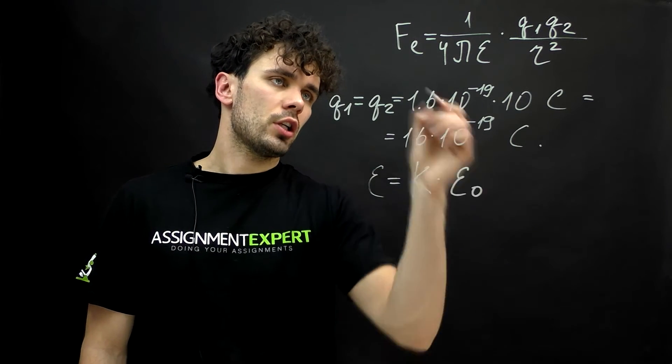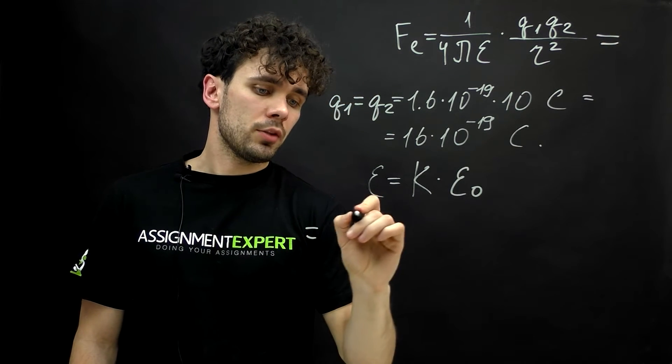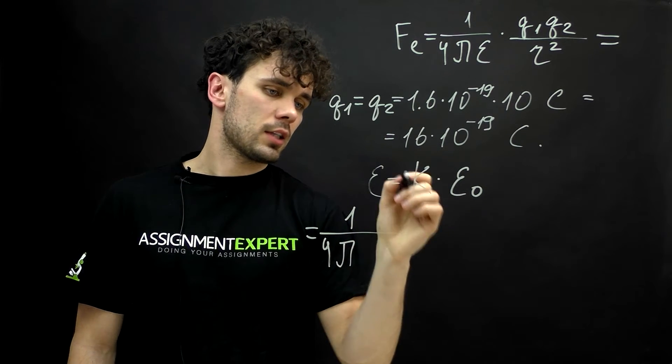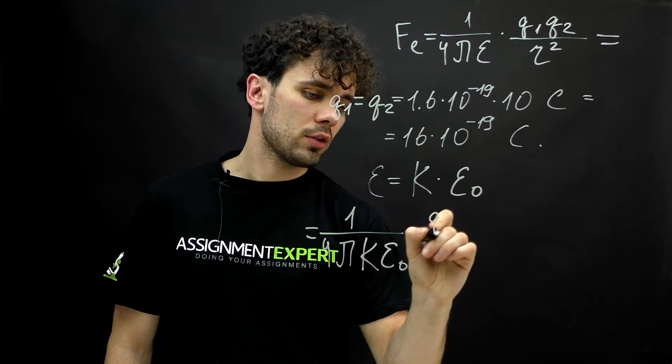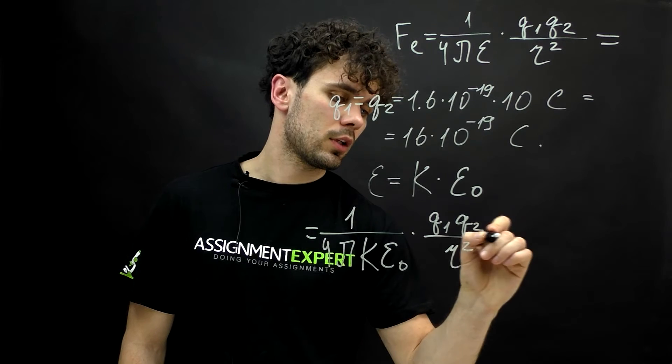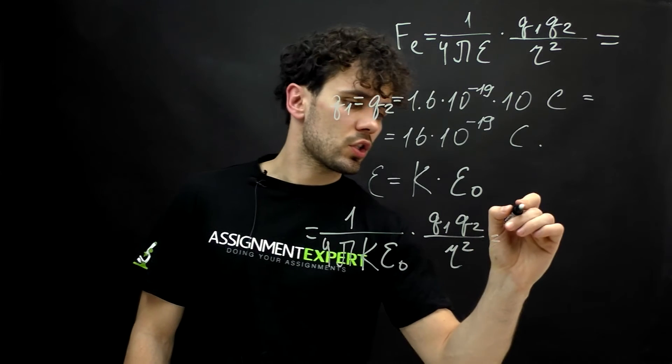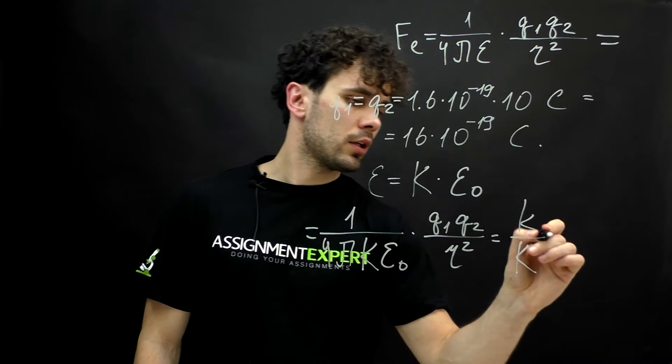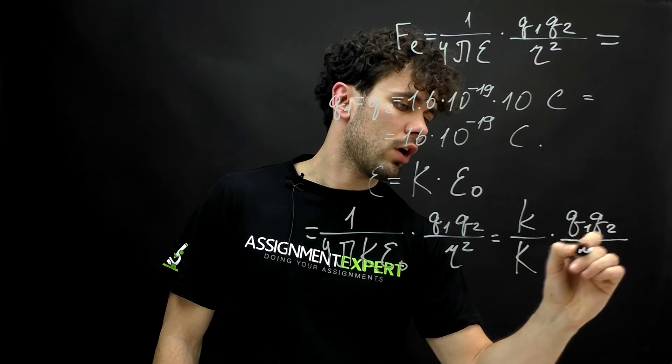So, now let's put this expression into Coulomb's law. We get 1 over 4 pi times k times epsilon zero times q1 q2 over r squared. And over here 1 over 4 pi times epsilon zero gives us small k times q1 q2 over r squared.